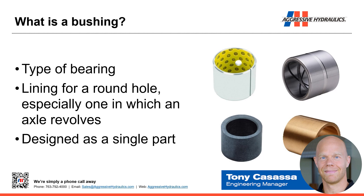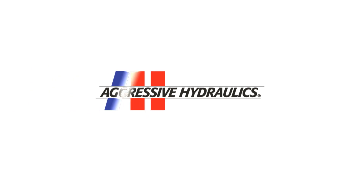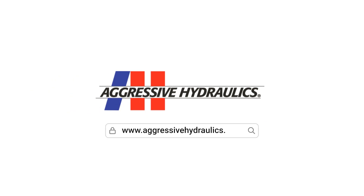Thinking about our mount and the pivot pin — the bushing is in there to allow that to move. Bushings specifically are designed as one part. So, while a bearing can be multiple parts, a bushing is designed as a single part. This concludes part one. Be sure to check out the remaining videos linked below. Contact us today to start your purpose-built process.